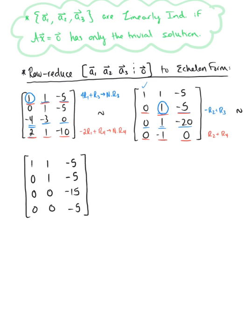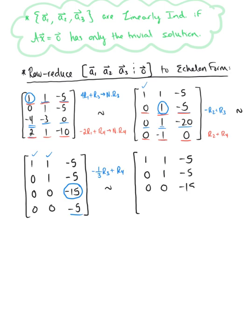Our first and second columns are all set, and we move to our third and final pivot. We want to use this to eliminate the entry below it. Scaling the third row by negative one-third and adding to the fourth row gives the new reduced fourth row. The first three rows remain as 1, 1, negative 5; 0, 1, negative 5; 0, 0, negative 15. The fourth row becomes 0, 0, 0.